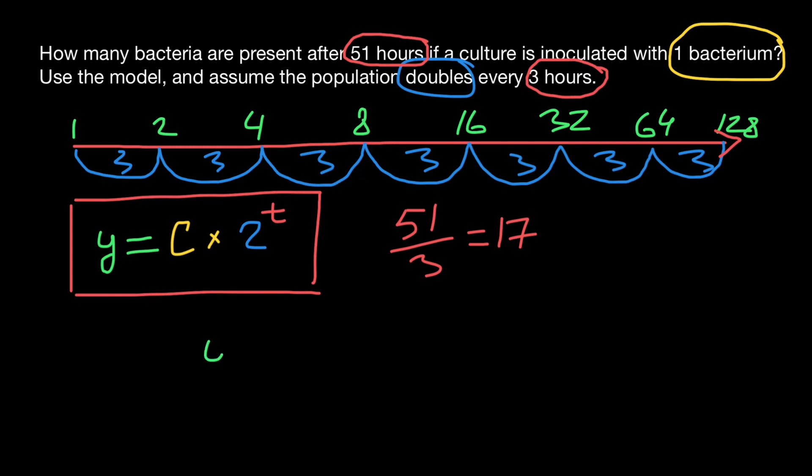Our calculations are going to be Y equals initial number of bacteria one, which we multiply by two, which means doubling. Number of doubling cycles goes here, so power 17. And our answer is 131,072 bacteria.